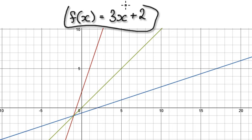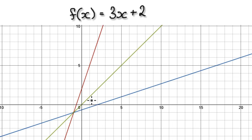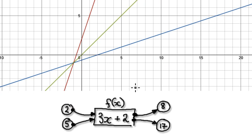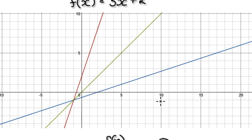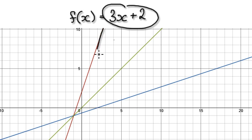So if you have a function f of x equals 3x plus 2, what that means is you've got a machine-like thing. If you put the number 2 in, it will spit out the number 8. Looking at it on our graph, if you get a graph plotter and plot this, it will give you this red line here.